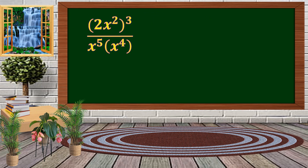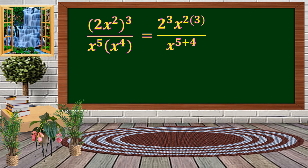Now, some applications of the laws of exponents. In our numerator, we apply Power of a Power by distributing the exponent 3. For the denominator, we apply Product of Powers by adding the exponents 5 and 4. The outcome in the numerator is 2 raised to 3 and x raised to 2 times 3; the denominator becomes x raised to 5 plus 4.